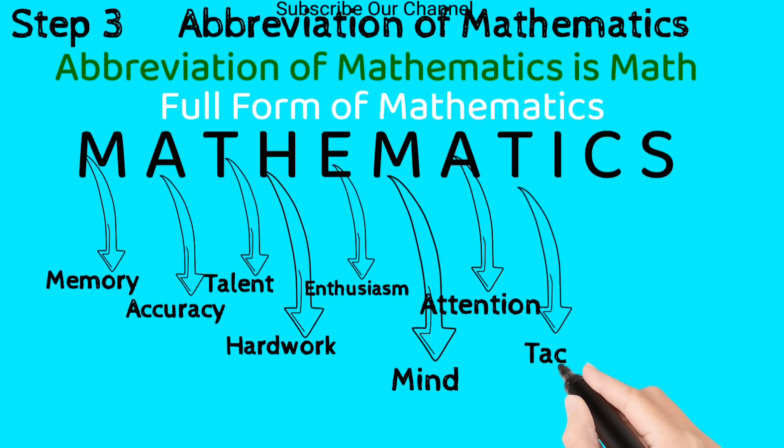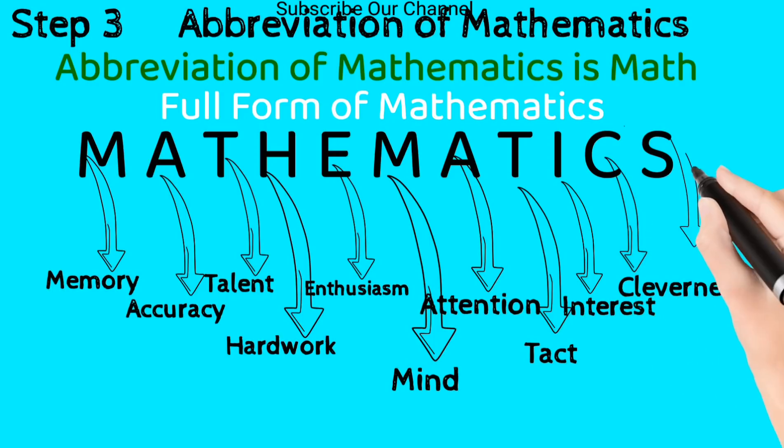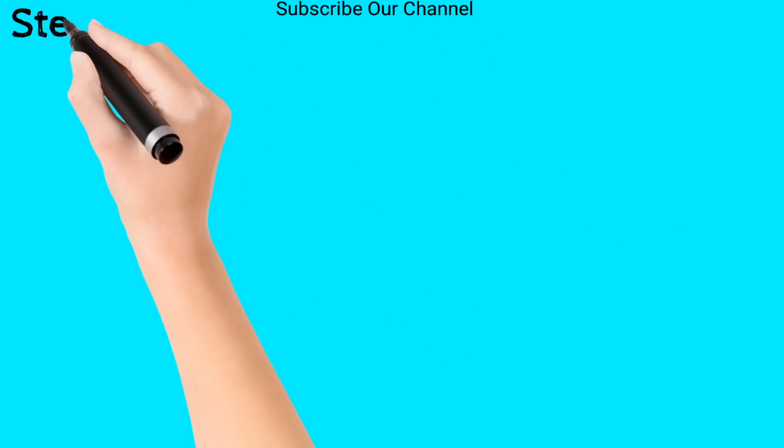I stands for interest, C stands for cleverness, S stands for personality. Now the step number four.